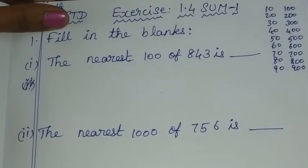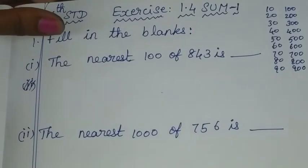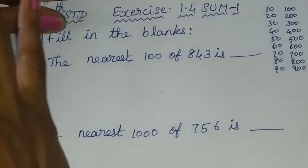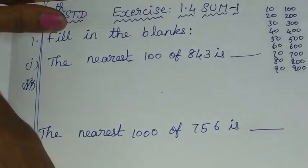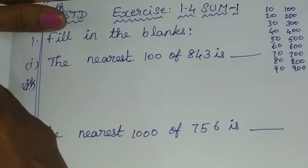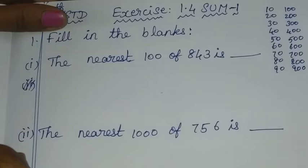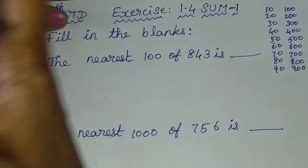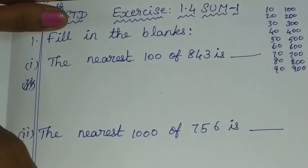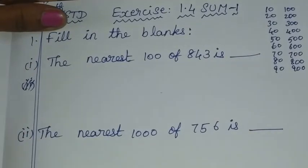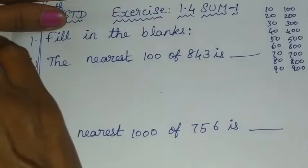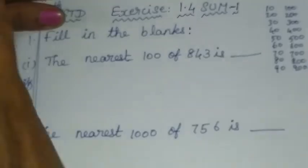Now, where do we use rounding in real life? Let's go to a store. We have 105 rupees. The item at the store is 105 rupees — you can estimate it as 100 rupees. That's how rounding works in everyday life.